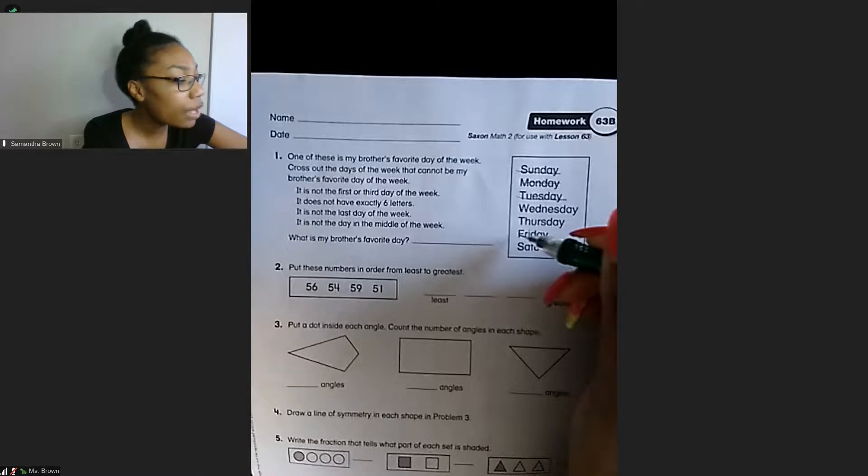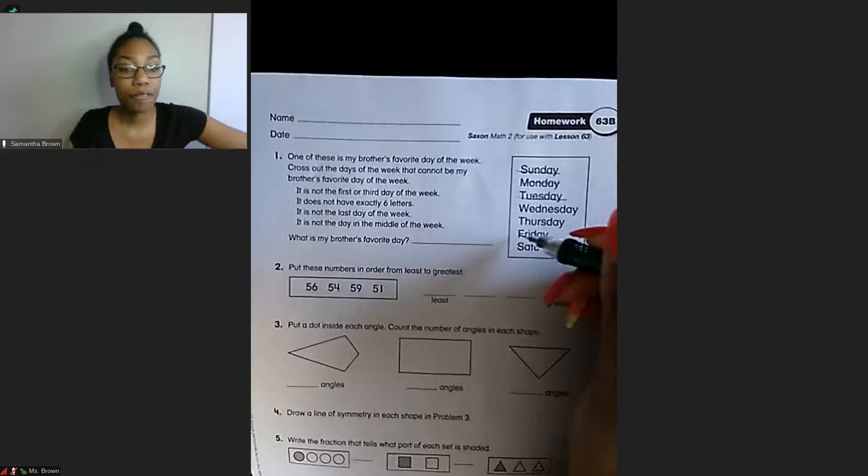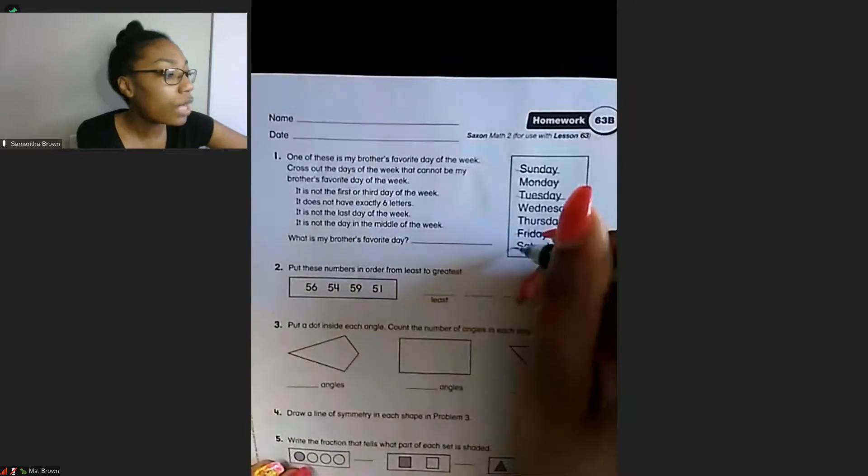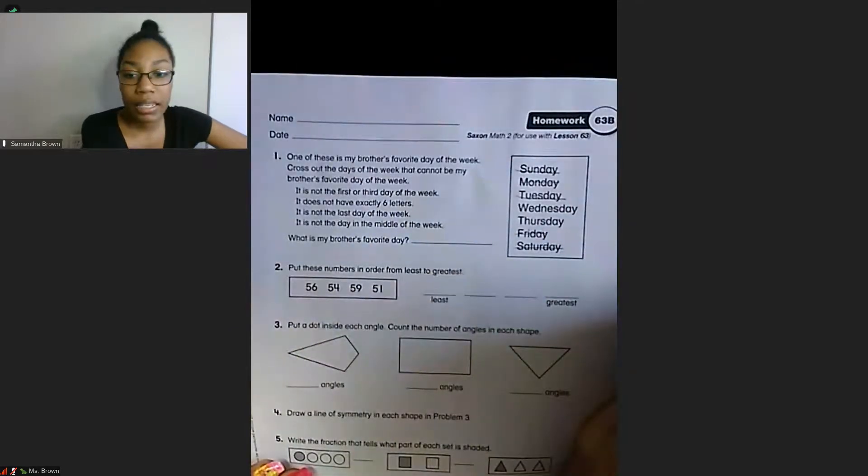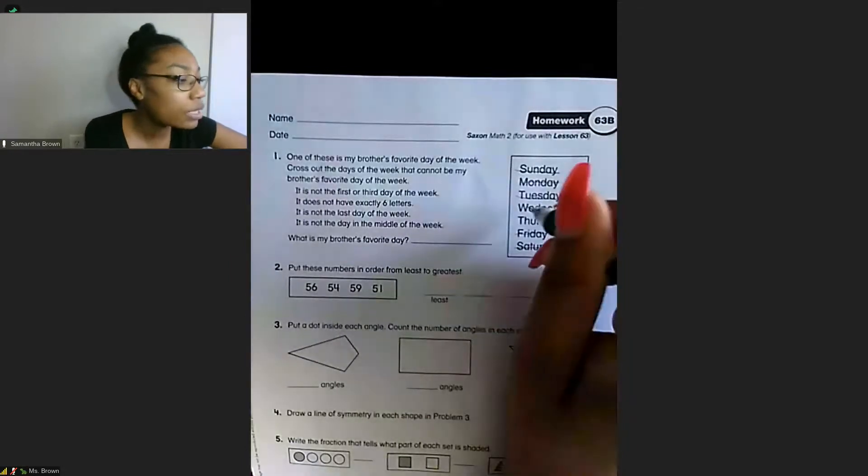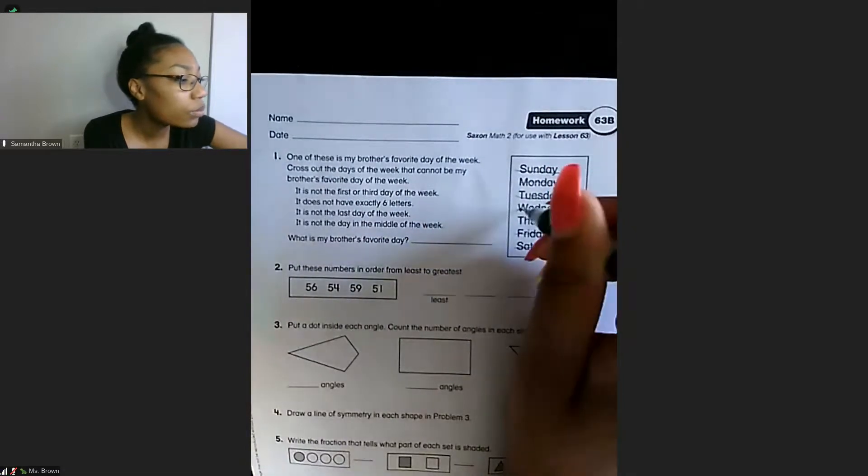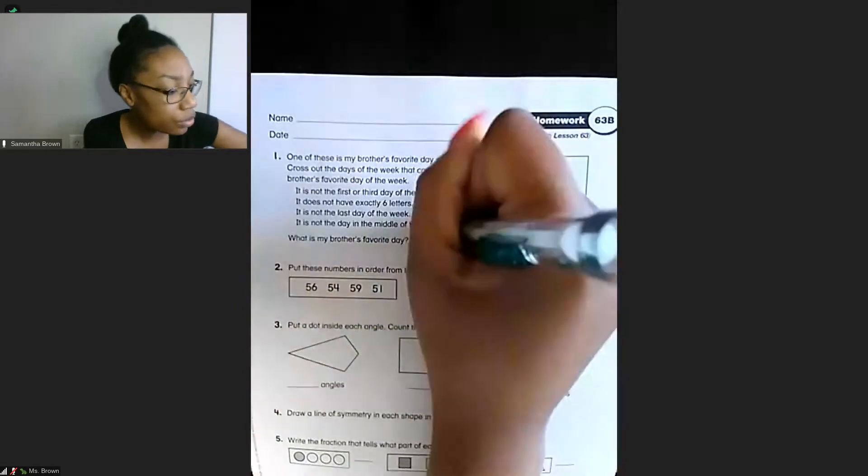The next clue says it is not the last day of the week. So if we're looking at the format that they have for us on the paper, starting with Sunday and ending with Saturday, Saturday would technically be the last day of the week so we need to cross off Saturday. And then it says it is not the day in the middle of the week. So we know that Wednesday is our middle of the week day, so that leaves Thursday. So our answer is Thursday.